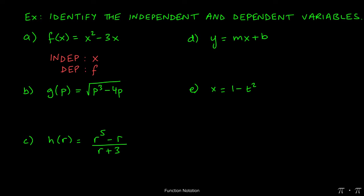Similarly, for part b, we see that the input variable is p and the output variable is g. Therefore, the independent variable is going to be p and the dependent variable is going to be g. The value of g depends on whatever value of p we choose.